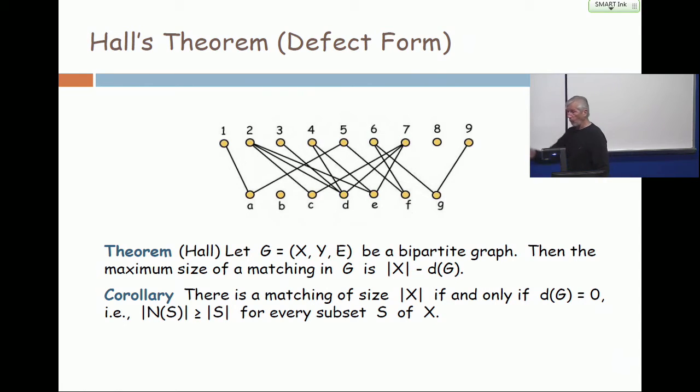Singleton B works. One candidate, how many neighbors? Zero. That's a defect of one right there.